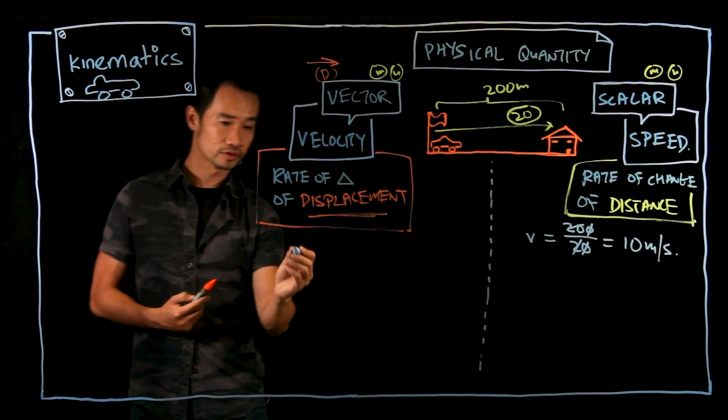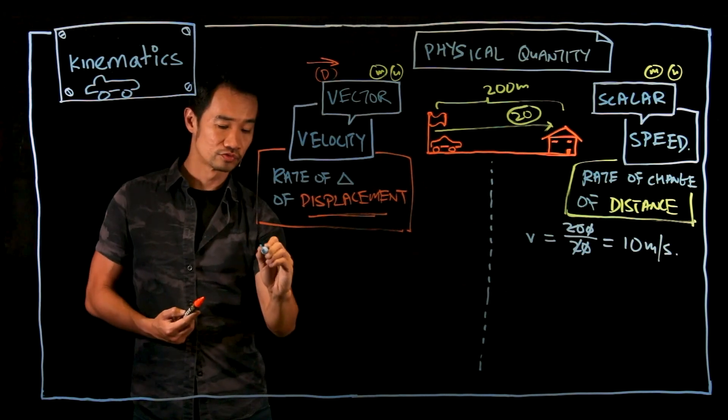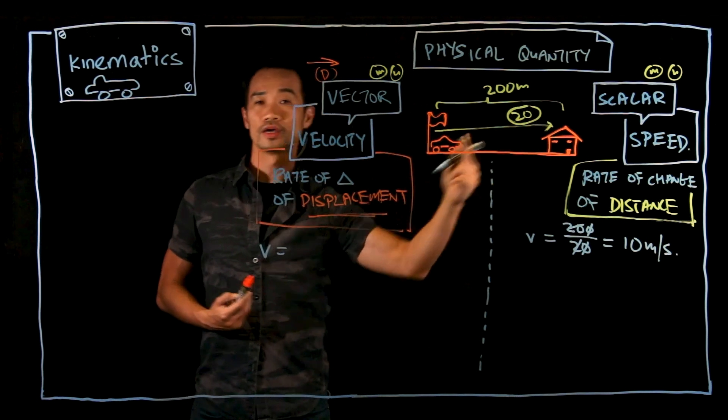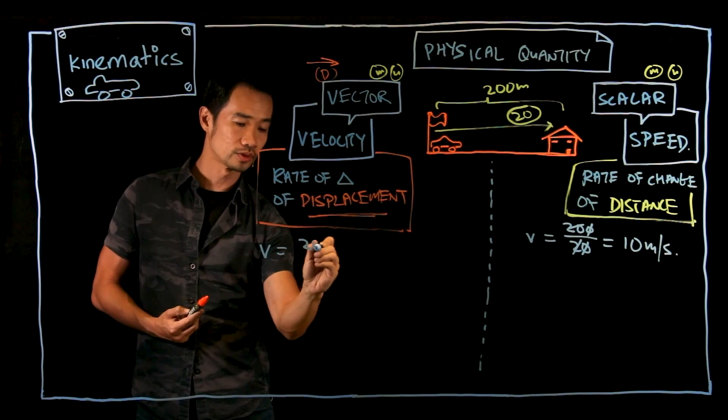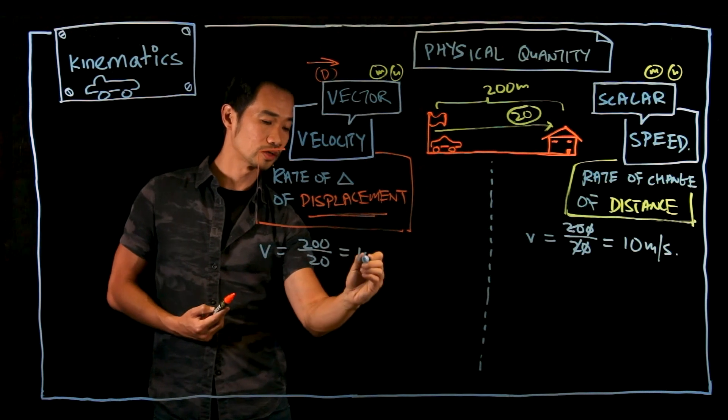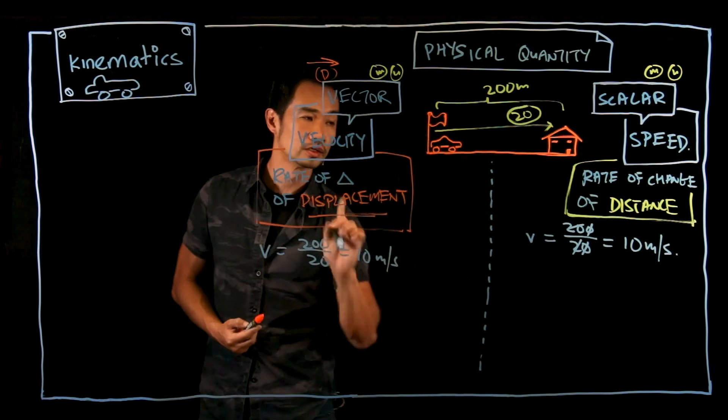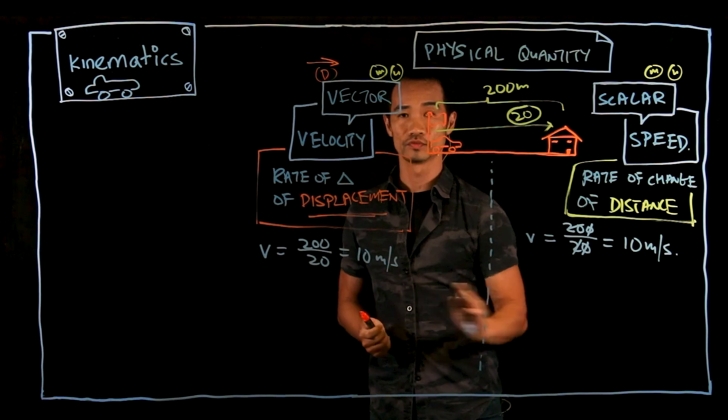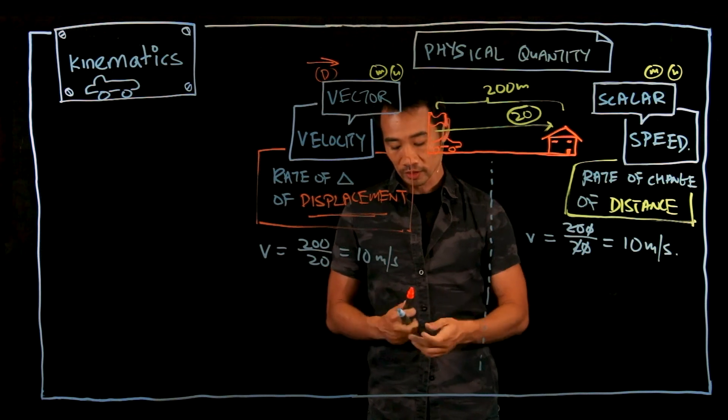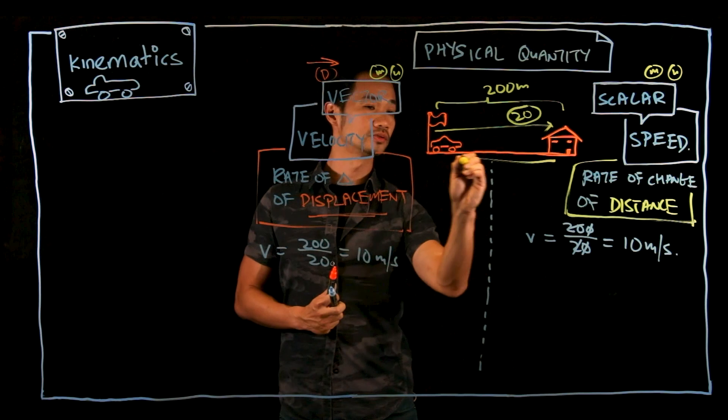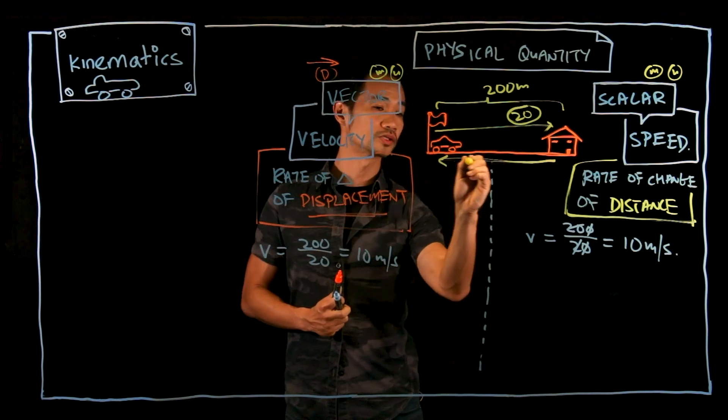How about velocity? So velocity is rate of change of displacement. V is equal to, this way, one way displacement is 200 as well. Time taken is 20 and then you will also get 10 meters per second. So in this scenario, both speed and velocity will give you the same value. But what if the car comes backwards to this point after you reach the house?